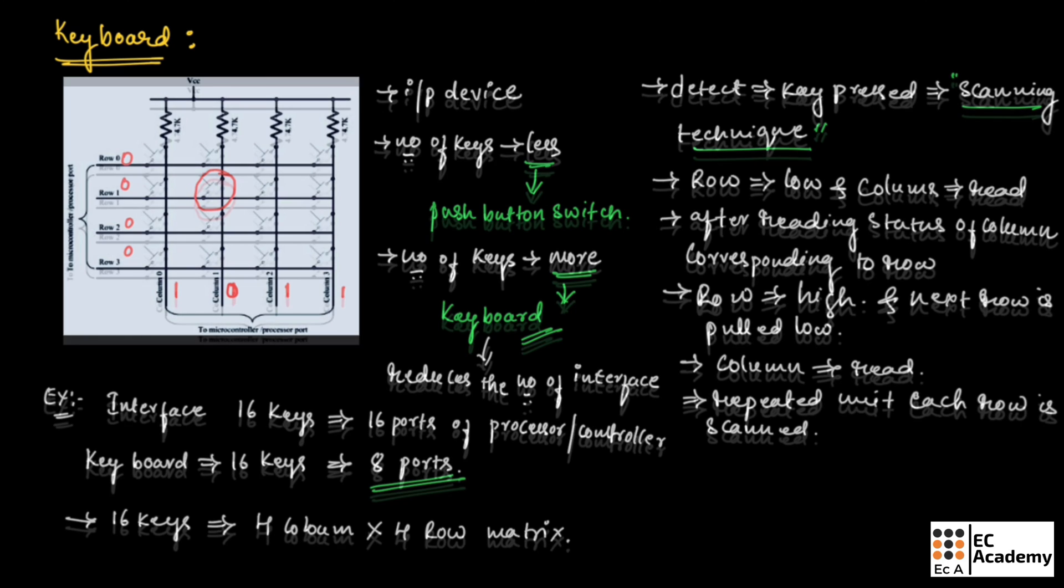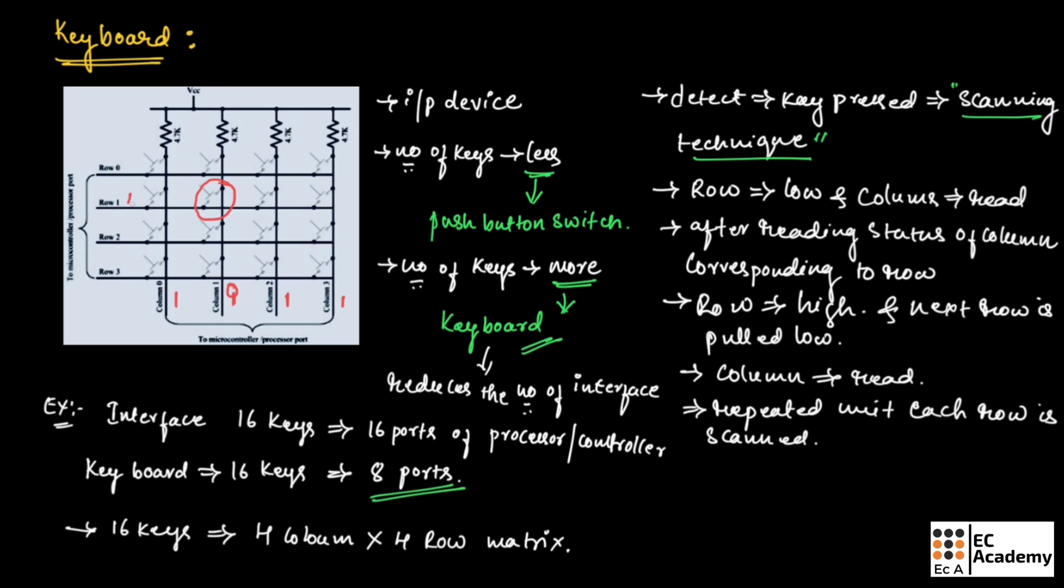To understand that, each row is made as 1 except for 1 row and status of each column is checked. Now second row is made as 0 and first row is made as 1. When second row is made as 0, correspondingly column 1 will become 0, which identifies that the key related with row 1 and column 1 is pressed and the particular key is identified.